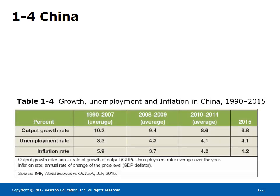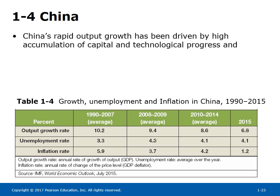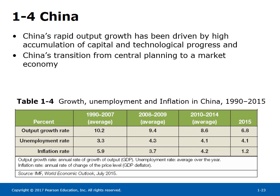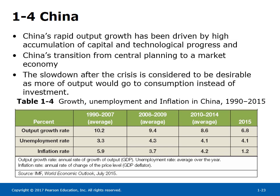Why China is seen as one of the major economic powers in the world is shown in Table 1-4. Since 1980, China's output has grown at 10% a year for three decades, which implies doubling of its output every seven years. China's rapid output growth has been driven by high accumulation of capital, technological progress, and China's transition from central planning to a market economy. The slowdown after the crisis is considered desirable as more output would go to consumption instead of investment. Crisis slowed down growth, but not much, because lower export demand was offset by an increase in domestic investment demand through fiscal expansion by the Chinese government.